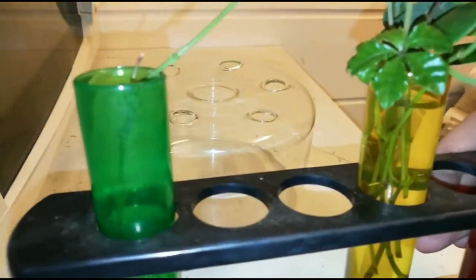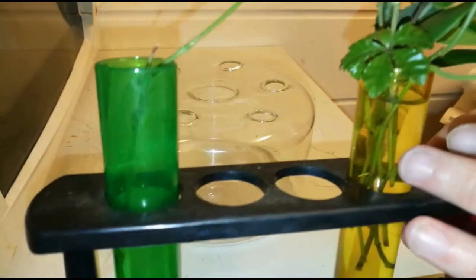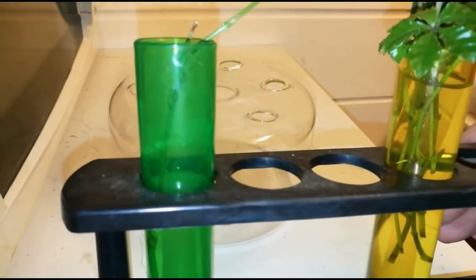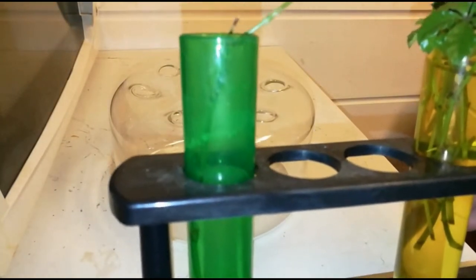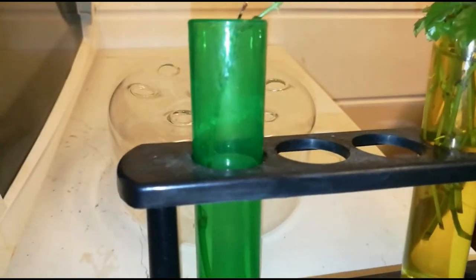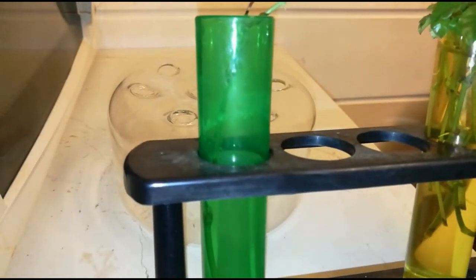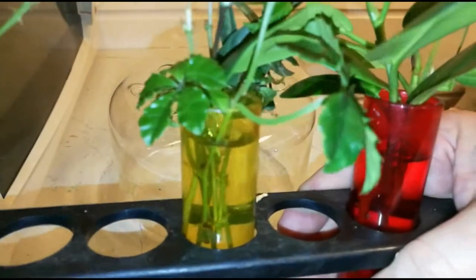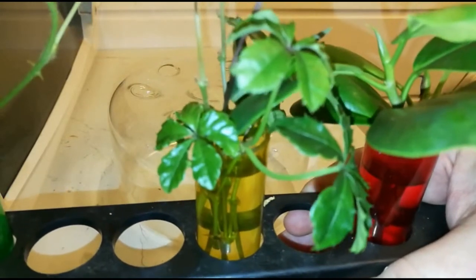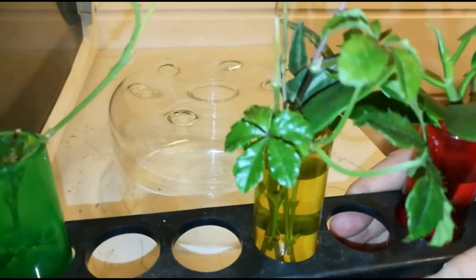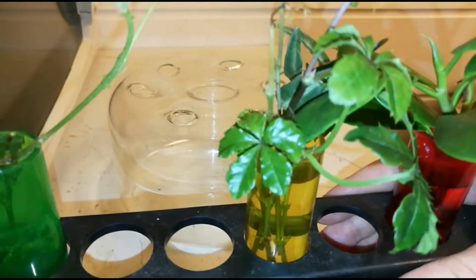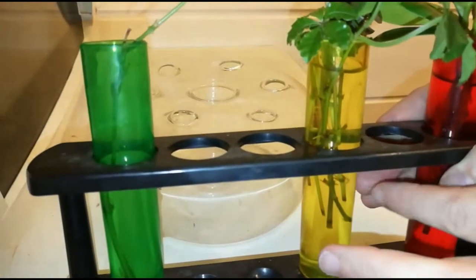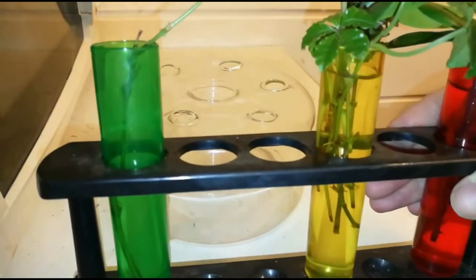But as you see, there's not room for many cuttings in each. And what I've learned is that the cuttings, when they start having roots, getting roots, then they release some kind of hormone into the water to make a rooting hormone into the water. And that could be beneficial for other cuttings that are more difficult to root. But when I have this setup here, it doesn't really work that well.